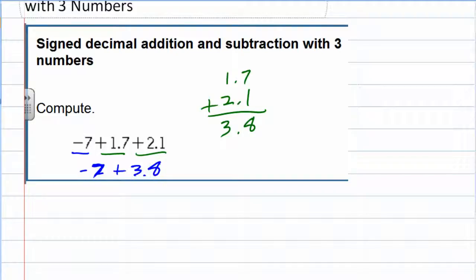Negative 7 plus 3.8. Now, however, the signs are different. So negative and a positive I'm going to have to subtract.